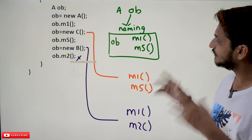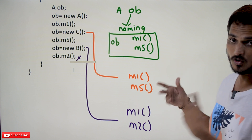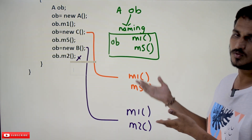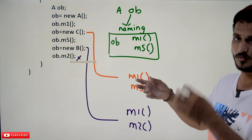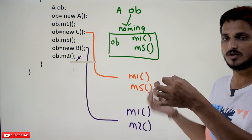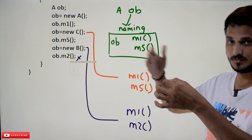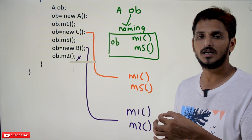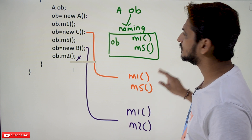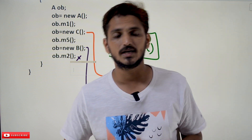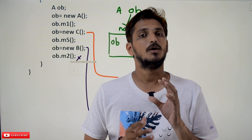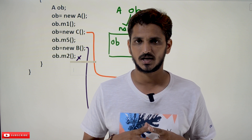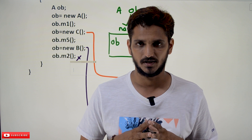These are the basics you need to understand when using the concept of a superclass variable referencing a subclass object — that is runtime polymorphism. Using the same reference name, we can use different methods belonging to different classes and different objects. Hope you understand the concept. Please post any questions in the comment section below. Thanks for watching — if you haven't subscribed, please subscribe and press the bell icon for the latest updates.